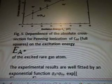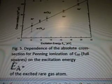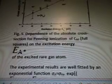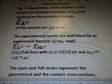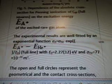Okay, so February 5, dependence of the absolute cross-section for pending ionization of C60 full squares on the excitation energy. So, again, we have our graph showing the KR, the NE, HE, or whatever the letters are. AR is over here, AR is over there, and then I can't read what it says. EA of the excited rare gas atom. Experimental results are well-fitted by an exponential function. You can always go to the link and find it. The open and full circles represent the geometrical and contact cross-sections respectively. See text for details.